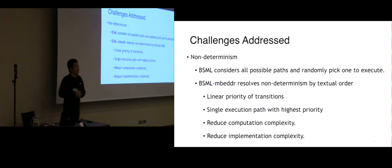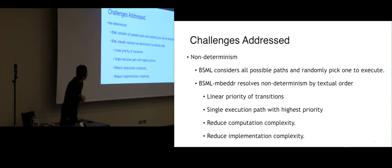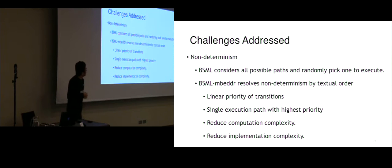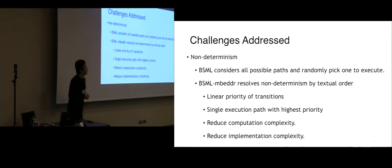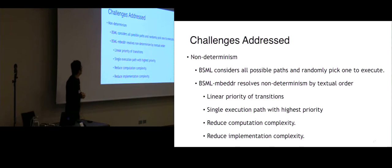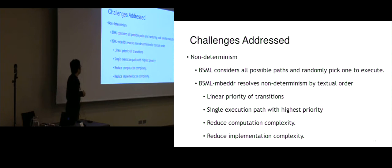What are the challenges we encountered doing this engineering work? First is non-determinism. BSML considers all possible execution paths and randomly picks one to execute, which could be very costly. In BSML Embedder, we resolve non-determinism by textual order: whenever a priority can't otherwise be defined, we refer to textual order, so whoever is defined first has higher priority. This leads to a linear priority of transitions, and based on linear priority we can calculate a single execution path with the highest priority within a small step, so we don't need to explore all possible paths, reducing computational and implementation complexity.